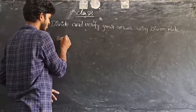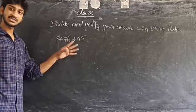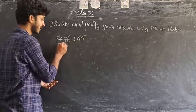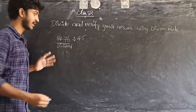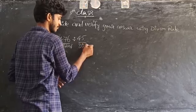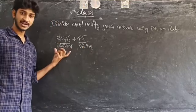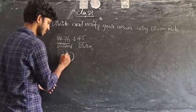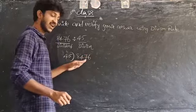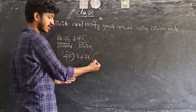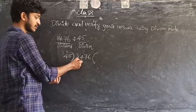The first problem is 8476 divided by 45. In this problem, 45 is called the divisor and 8476 is the dividend. We have to write 45 on the left side of 8476, and some digits are divided in the center.